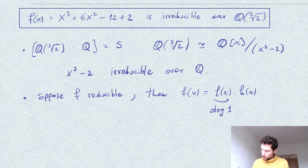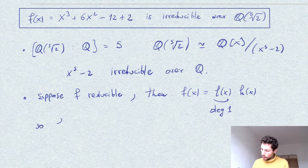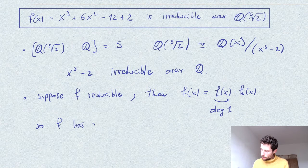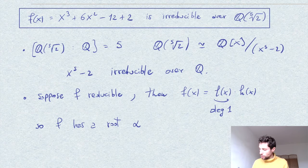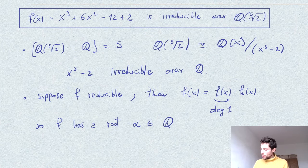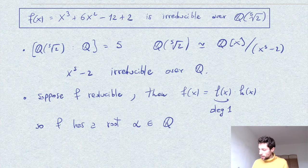Say one of these is degree 1. In this case we get that f has to have a root, say alpha. And I claim that this root cannot be in Q but has to be in this extension.